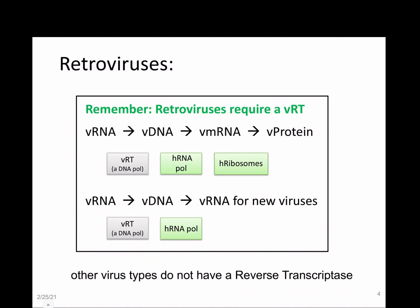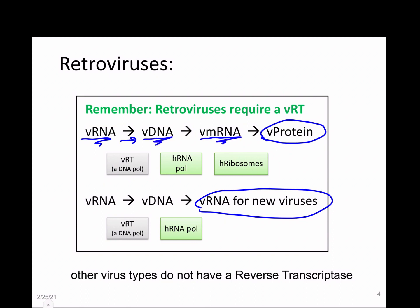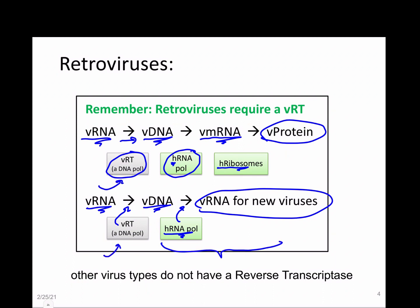HIV is a retrovirus — I'm mentioning it again because it's so important for the pharmacology. Retroviruses need to produce viral proteins and viral RNA for new viruses. To make viral protein from their viral RNA, they must synthesize RNA into DNA and then make mRNA. They need viral reverse transcriptase for that, plus standard human RNA polymerase and human ribosomes to make the protein.